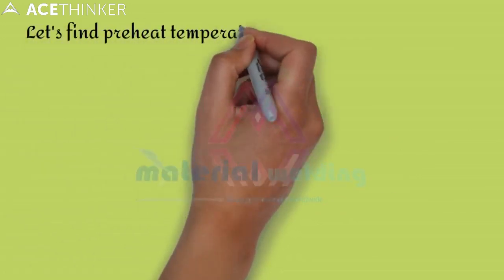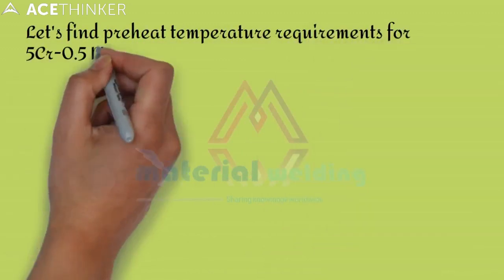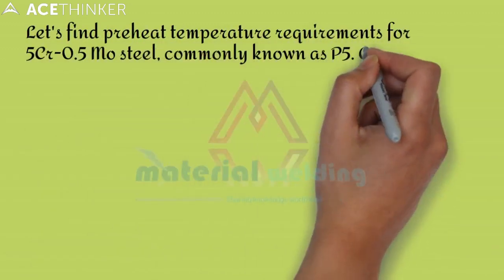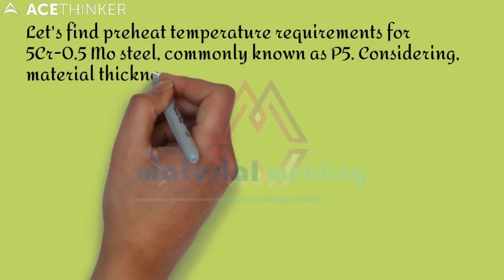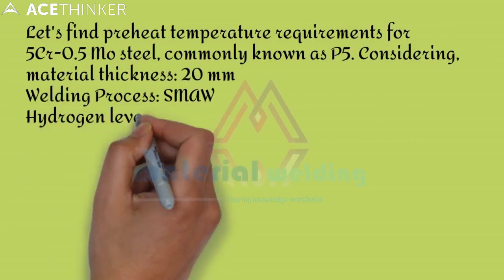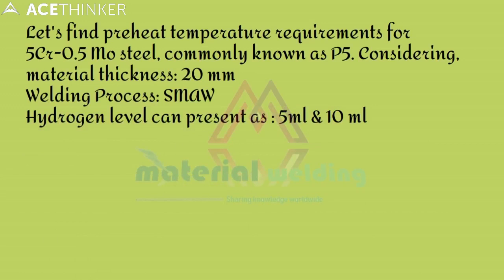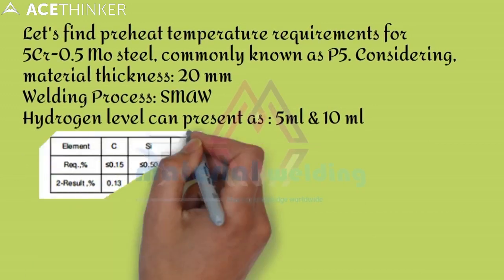In this example, we are taking P5 material having a thickness of 20 mm and hydrogen levels of 5 ml per 100 grams and 10 ml per 100 grams. You can choose any other value of hydrogen if you accept a higher level of hydrogen in the weldment.